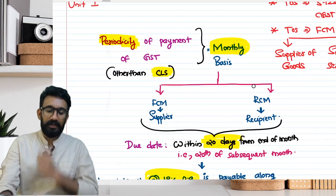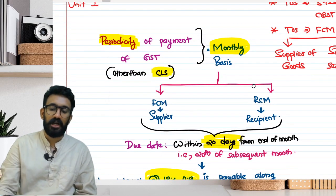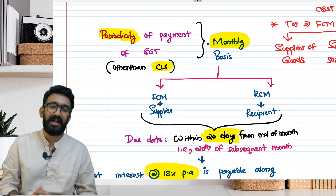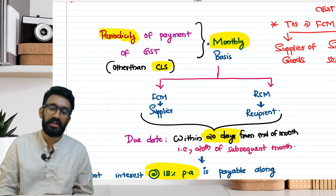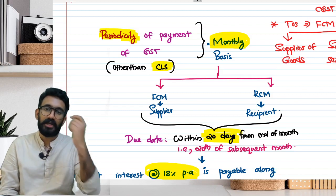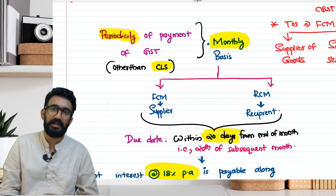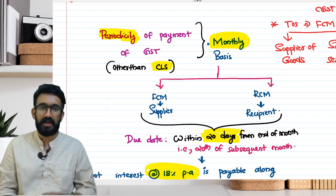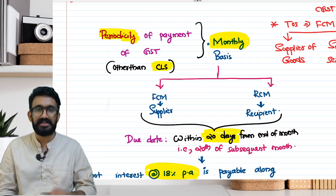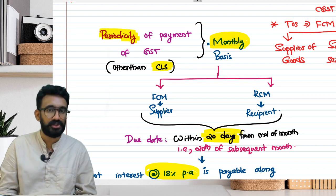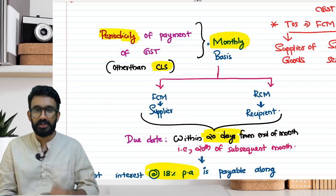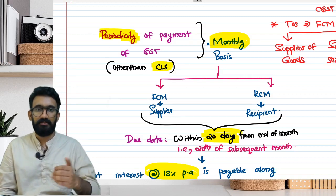What is the periodicity in which GST has to be paid to the government? I am not asking about the composition levy scheme (CLS). In CLS, the tax computation generally works based on turnover, so time of supply provisions have less relevance there. If you want to understand composition levy scheme, watch session number three in my YouTube channel.